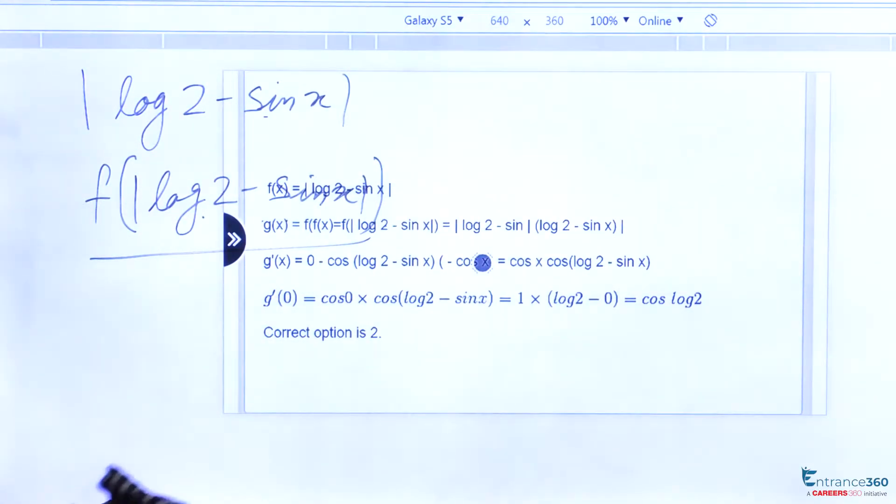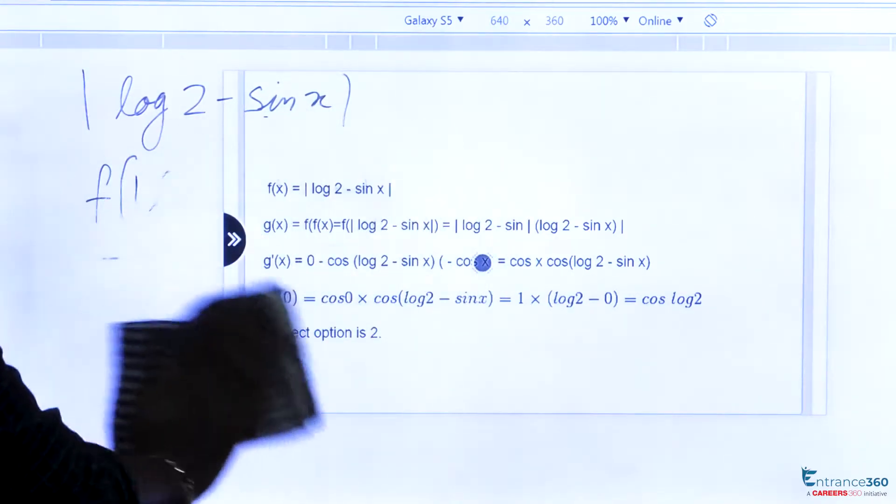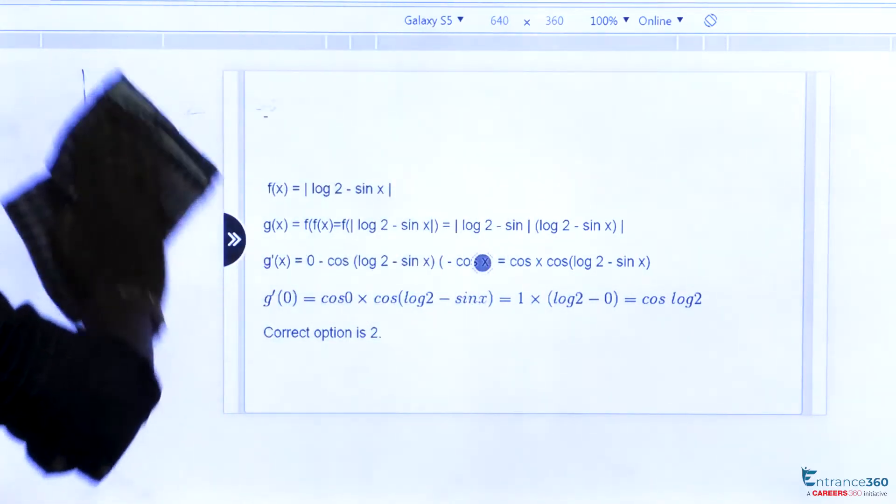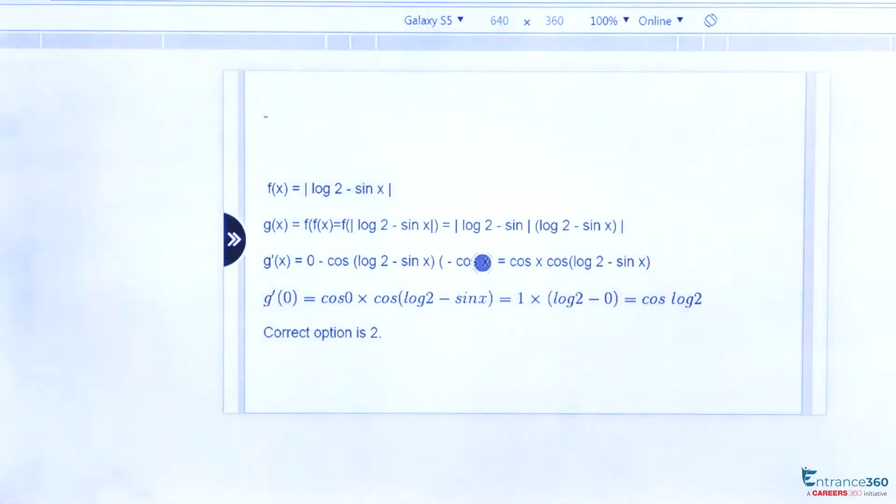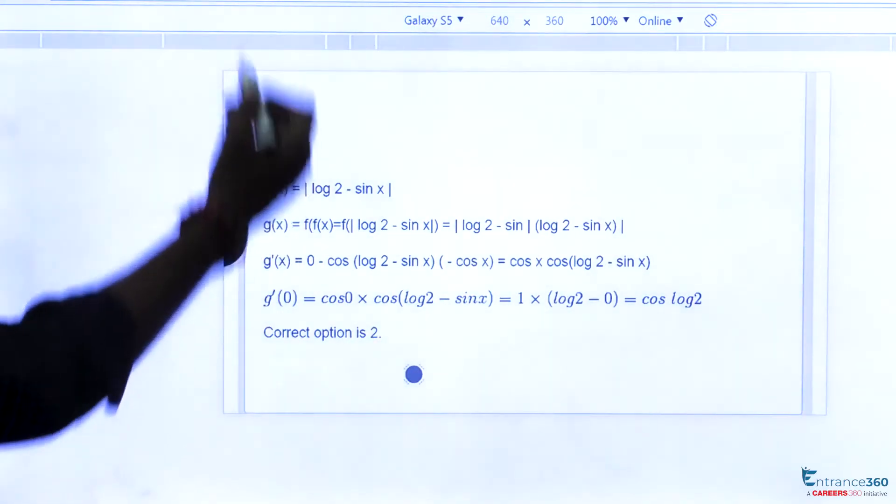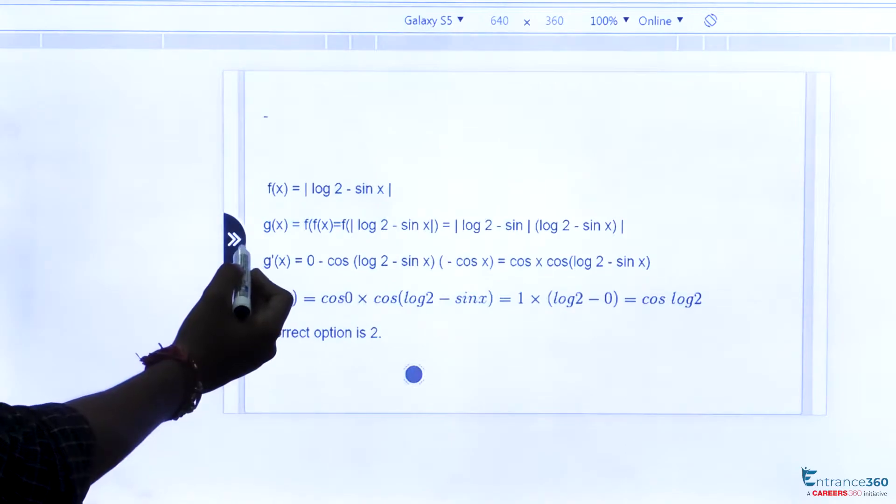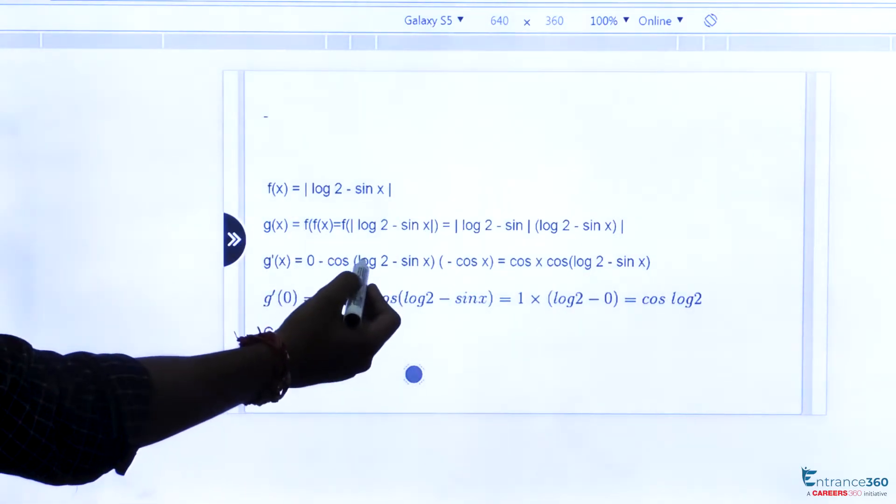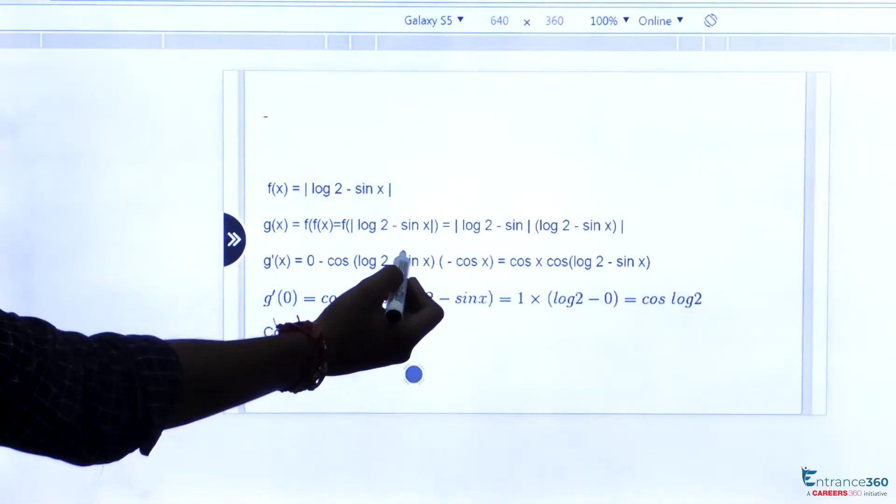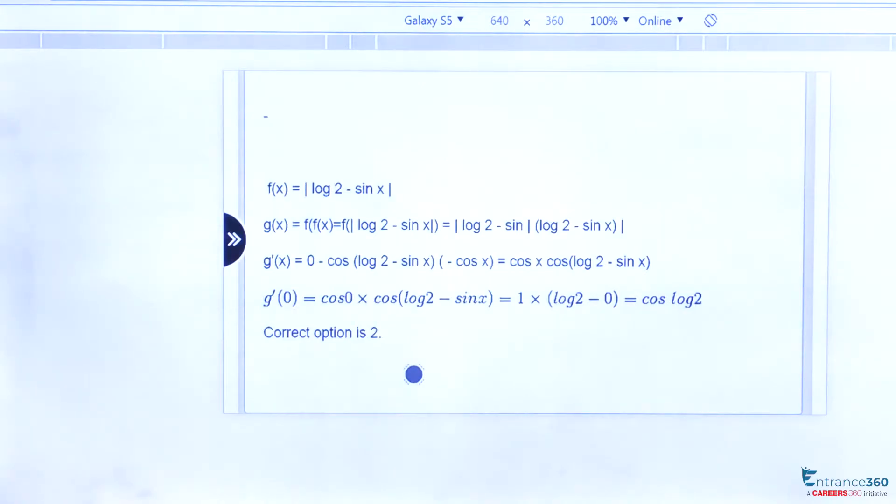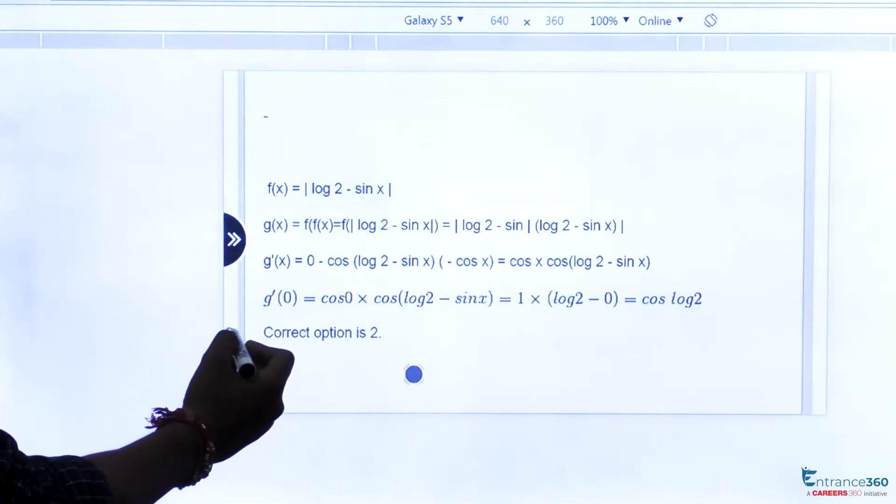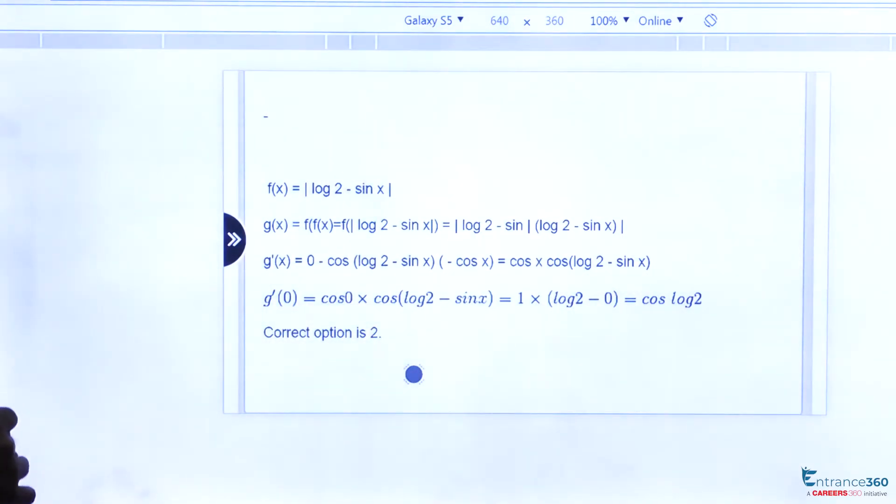Now we need to differentiate this function, as we want to find the value of g'(0) as asked in our question. After differentiating, the differentiation of sin x is cos x, so we get cos(log 2 - sin x) times minus cos x. After putting x equal to 0, we get our final result as cos of log 2.